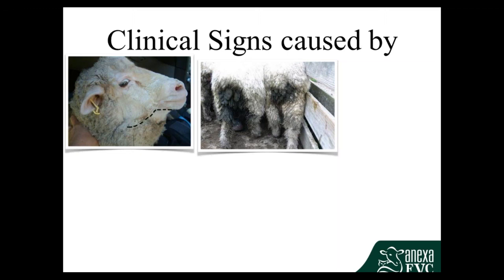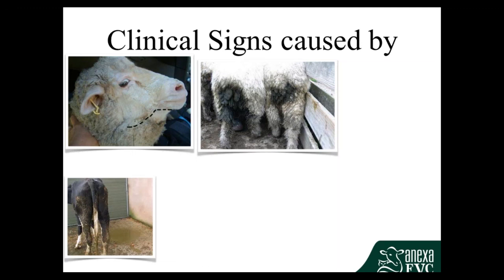Now there's a cow with the same sort of thing going on. Cows tend to have looser faeces anyway, but you shouldn't see this sort of staining on the hocks and on the tail. A normal cow will not have this sort of staining on her back end. It is another sign that she's more than likely got worms.